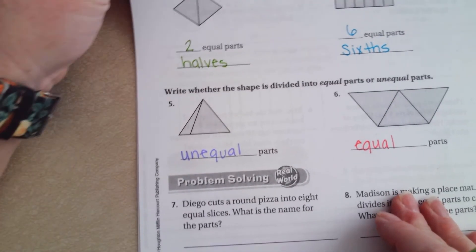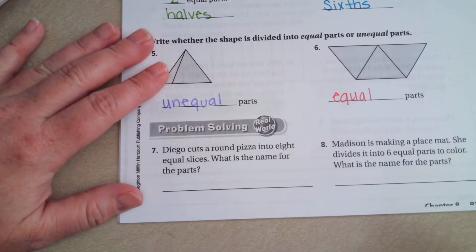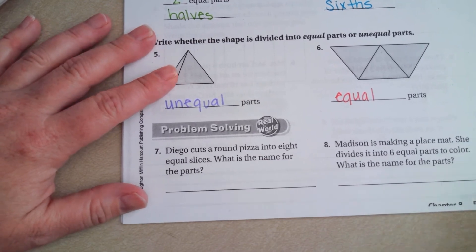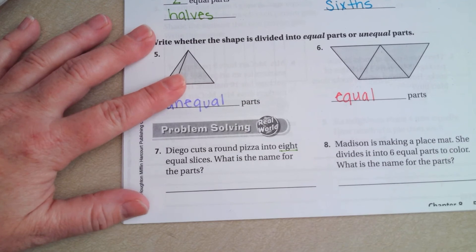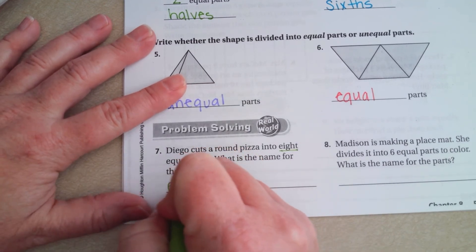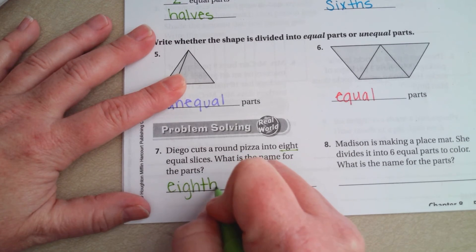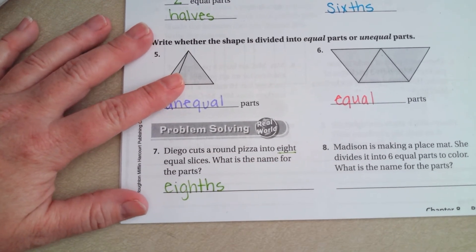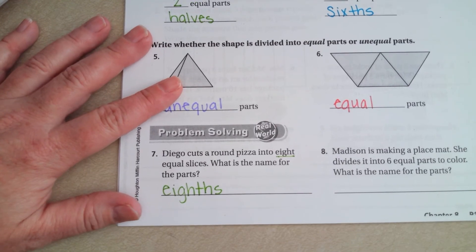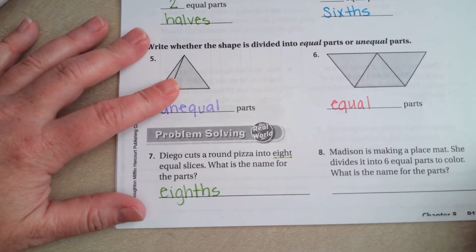Alright, guys. Diego cuts a round pizza into eight equal slices. What is the name for the parts? So, we're going to take eight. We're going to take that word. We're going to put an HS on it. Eighths. That's it, guys. Eighths. Try this one out, guys. Try number six on your own.